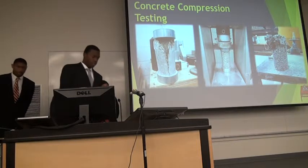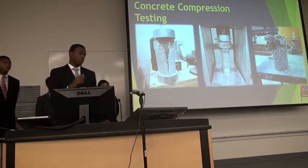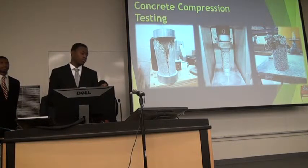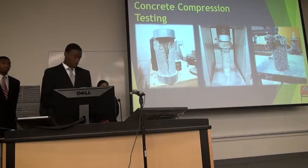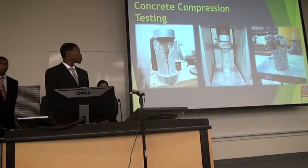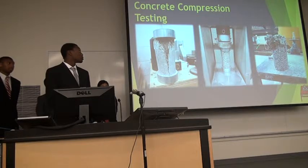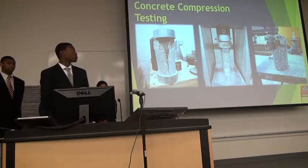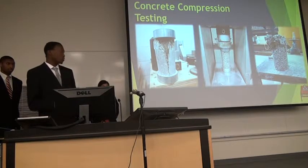Unlike the tension test, for the compression test we put the cylinders up vertically, then used the machine to apply load from the top to compress it down. These were the results from the conventional concrete, porous, and fiber reinforced porous concrete. Notice how the porous concrete broke into many pieces after being compressed.